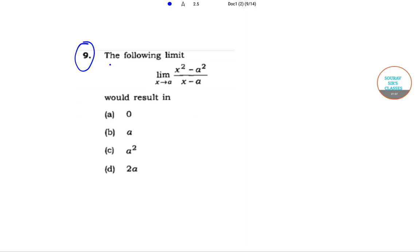We have to find out the value of the limit x square minus a square by x minus a as x tends to a. The options are 0, a, a square, and twice of a.